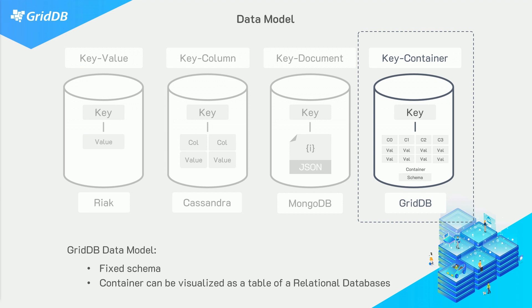The major difference between NoSQL databases and relational SQL-based databases is the lack of inter-collection relationships. In regular SQL, you would use joins between two different tables, and they're all related.